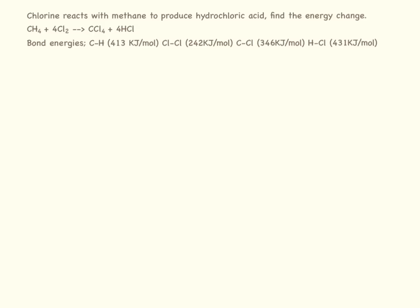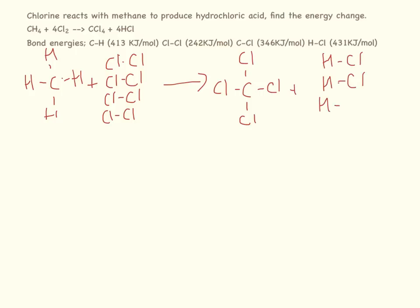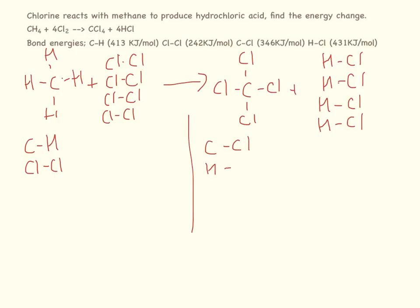Here we have the reaction of chlorine with methane. Draw everything out: methane has four C-H bonds, and we have one Cl₂ molecule. I know it might seem like a drag drawing all of these, but in the exam it's a stressful situation and you might make a silly mistake — taking the extra time to draw everything out is worthwhile. On the reactant side we have C-H bonds and Cl-Cl bonds; on the product side we have C-Cl bonds and H-Cl bonds.